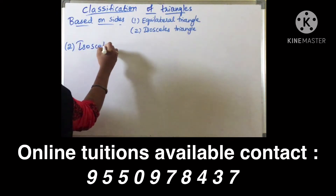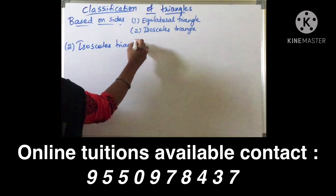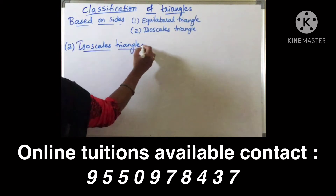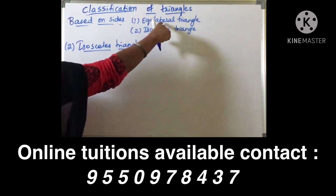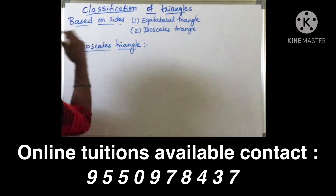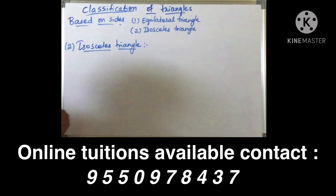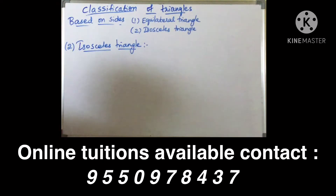On the basis of sides, we discussed equilateral triangle first. Coming to the second one — isosceles triangle. A triangle in which all three sides are equal is an equilateral triangle. Now coming to isosceles triangle: a triangle in which two sides are equal. A triangle has three sides, and if two of those sides are equal, then we call it an isosceles triangle.